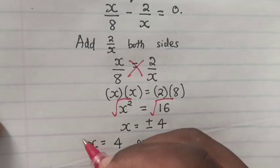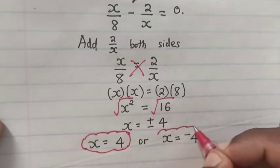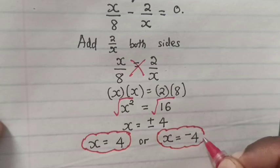So the value of x is 4 or the value of x is equal to minus 4.